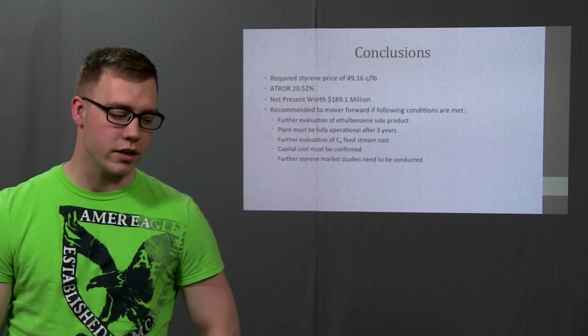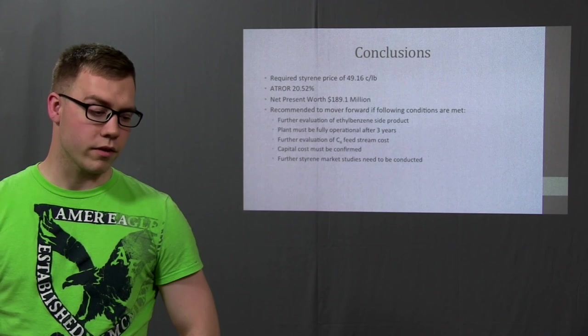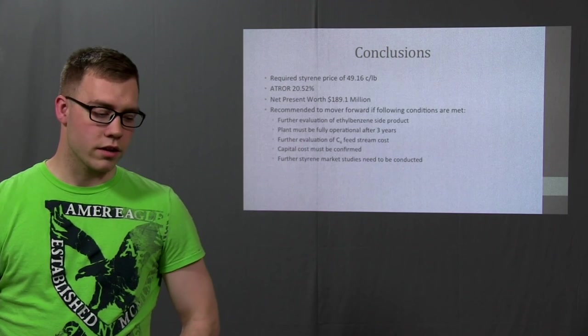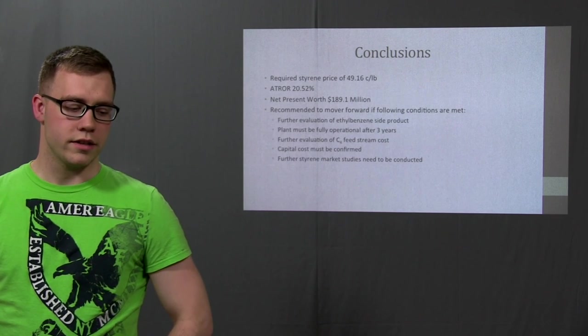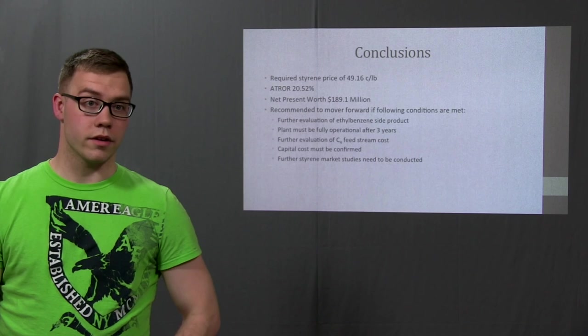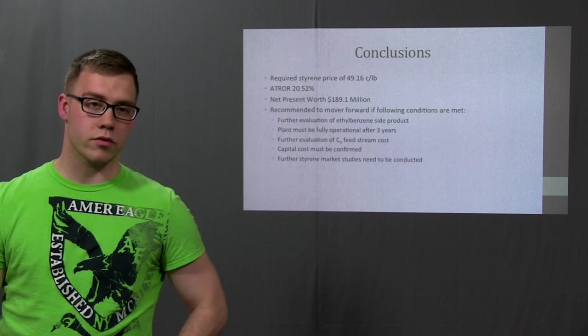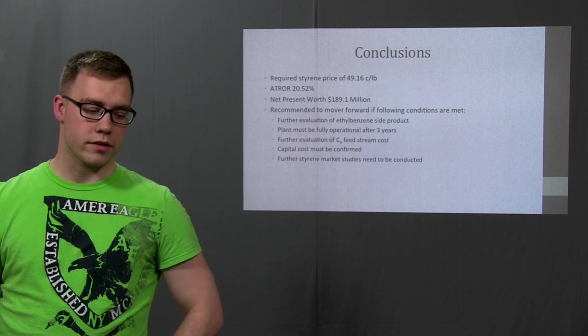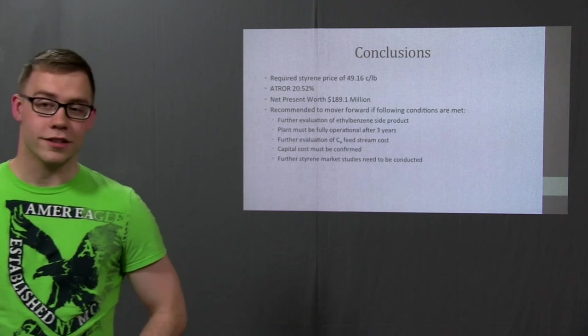Some of our recommendations are to look into the possibility of selling the ethyl benzene as a side product, which could eventually make us more money and give us more room for fluctuation in feed prices. The plant needs to be operational in about three years. Any longer and the minimum ATRO-R of 20% will not be reached. We need to study and monitor the prices of C4 and styrene, as even minute changes in unit prices could drastically drop the ATRO-R. Capital cost of building the plant has to be confirmed because a 3% increase in capital cost is enough to drop below the 20% ATRO-R evaluation. And then finally, we have to evaluate the styrene market to ensure it has room for the plant's capacity. For example, if only 93% can be sold, the ATRO-R will drop down to 16%. Thank you, and this concludes our presentation.